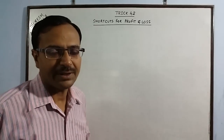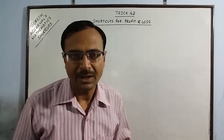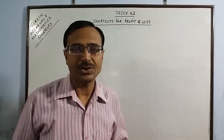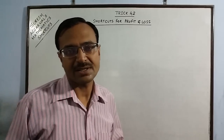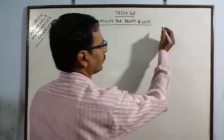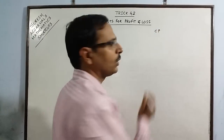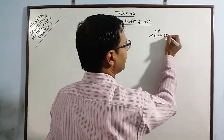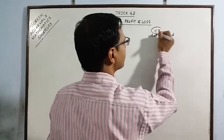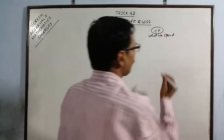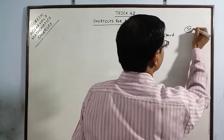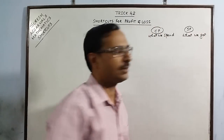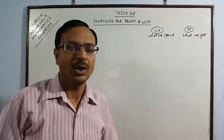Let me just take one minute and clarify the concept of profit and loss first. Then we will come to some of the very common questions of competitive exams in which the examinees face a lot of problems. We all know that the cost price of an item is basically what we spend. And the selling price of the item is what we get when we sell the item to a different person or in the market.